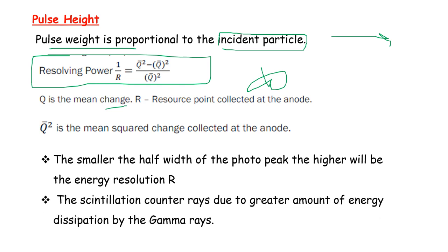The scintillation counter has poor resolution due to greater amount of energy dissipation by the gamma rays. This is an important MCQ question.